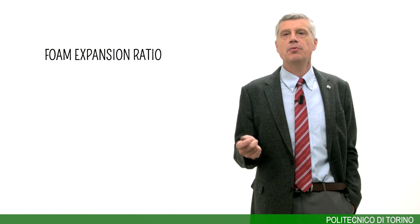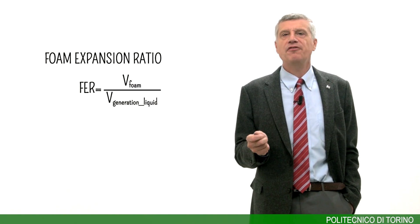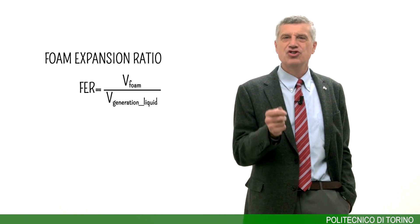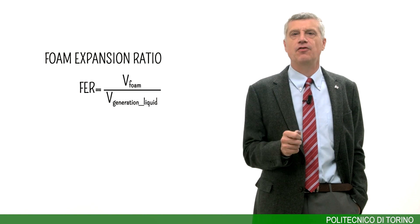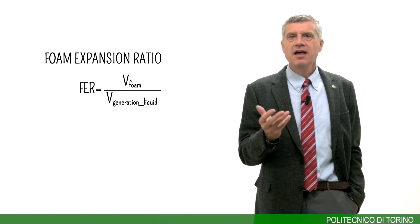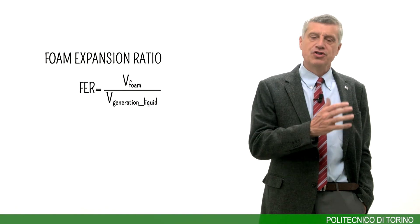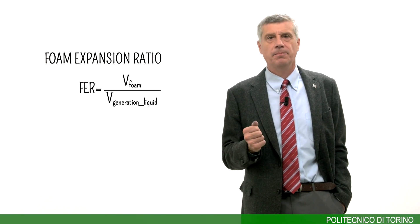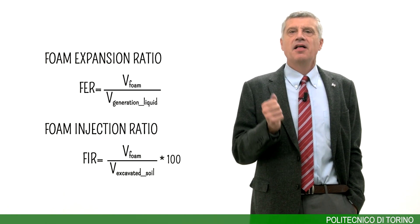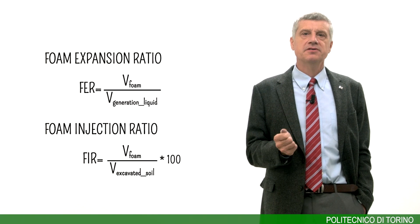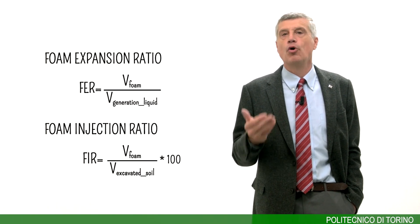The design parameters of soil conditioning with foam are: foam expansion ratio, which represents the expansion of the foam with reference to the foaming fluid volume. If this value is low, the foam is wet, meaning a lot of foaming fluid is present. If this value is high, the produced foam is dry, meaning there is more air in the foam. Dry or wet foam can be used depending on the type of water present in the soil. The foam injection ratio represents the volume of foam injected into the soil during excavation. These two parameters should be assessed before starting excavation through a proper laboratory study.